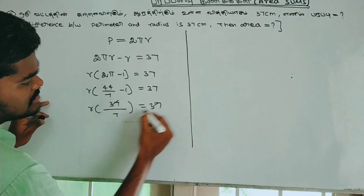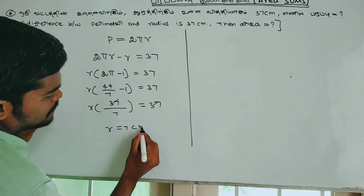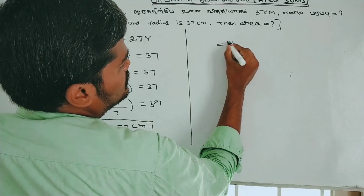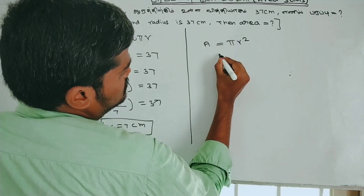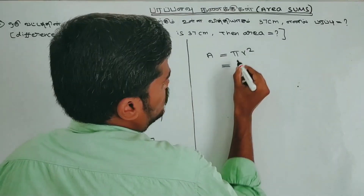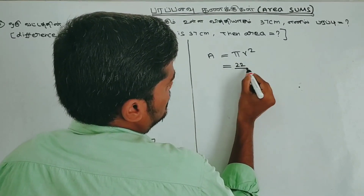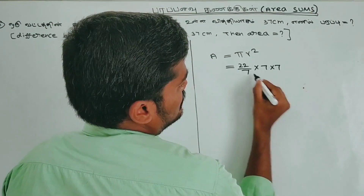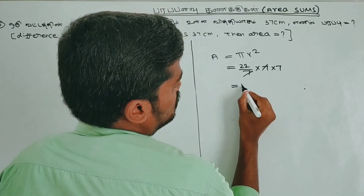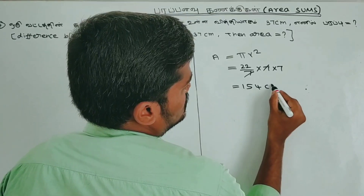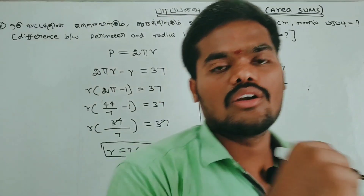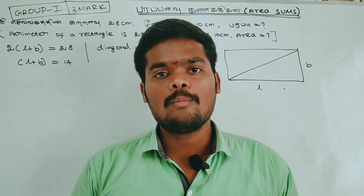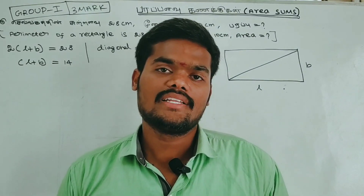Cancelling, r = 7 cm. Then area = πr² = (22/7) × 7 × 7 = 154 cm². This is the required area of the circle. This is a 3-mark question.